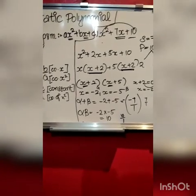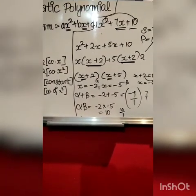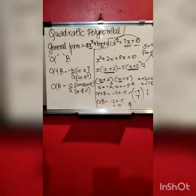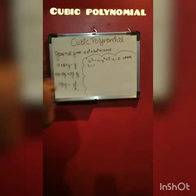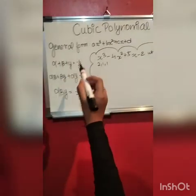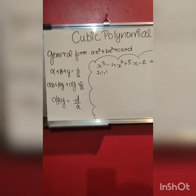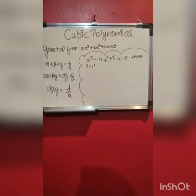This is the verification of the terms — how to verify zeros by using alpha and beta. Now we will try the same with cubic polynomial. The general form of cubic polynomial is ax³ plus bx² plus cx plus d.